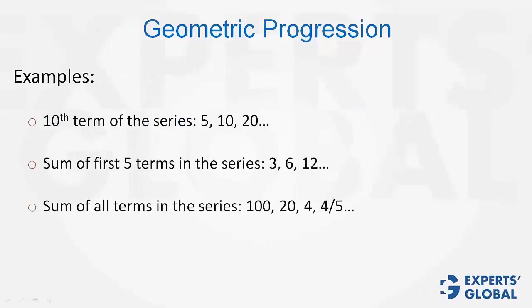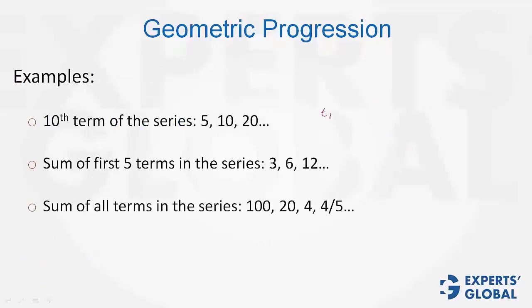Let's look at some examples. Tenth term, t10 equals a times r to the power of n minus 1. a is 5 here, r is 2, the common ratio. So, this is 5 times 2 to the power of 9 equals 5 times 512. The value is 2560.